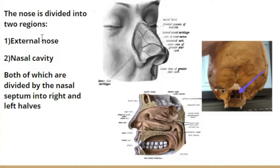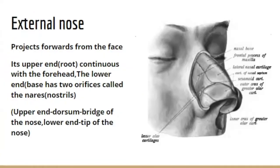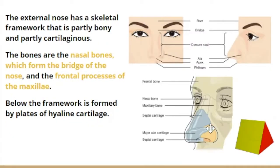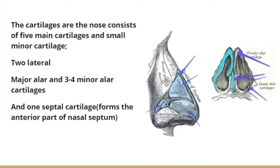The nose is divided into two regions: the external nose and the nasal cavity. The external nose is pyramidal in shape and projects forward from the face. Its upper end is continuous with the forehead and its lower end has two orifices called the nares or nostrils. It is partly bone and partly cartilage. The bones contributing to its formation are the paired nasal bones, the frontal process of the maxillary bone, and parts of the frontal bone. The cartilages are the lateral cartilage, the major alar cartilage, three to four minor alar cartilages, and one septal cartilage lying in the middle.